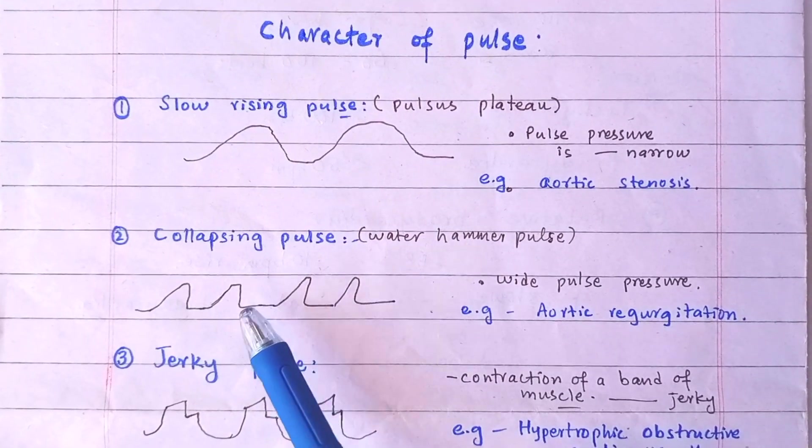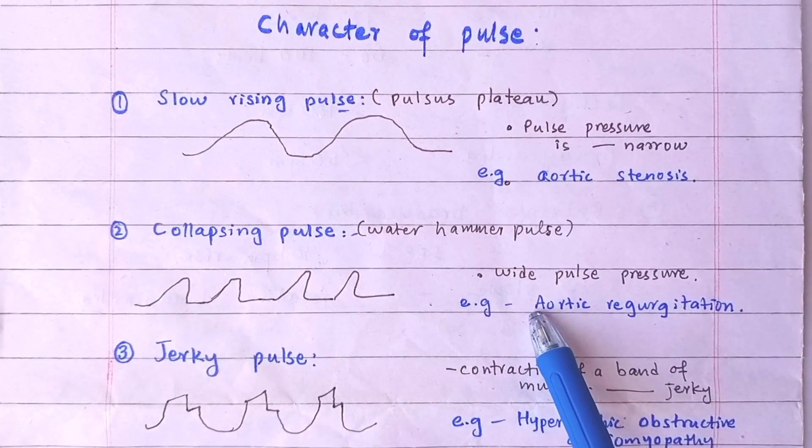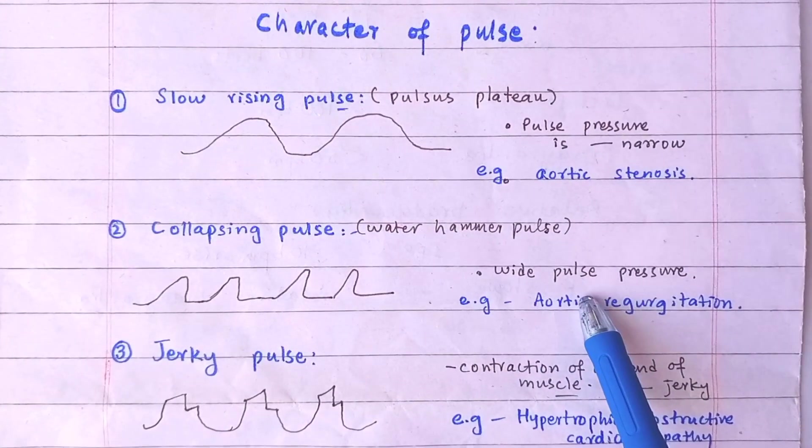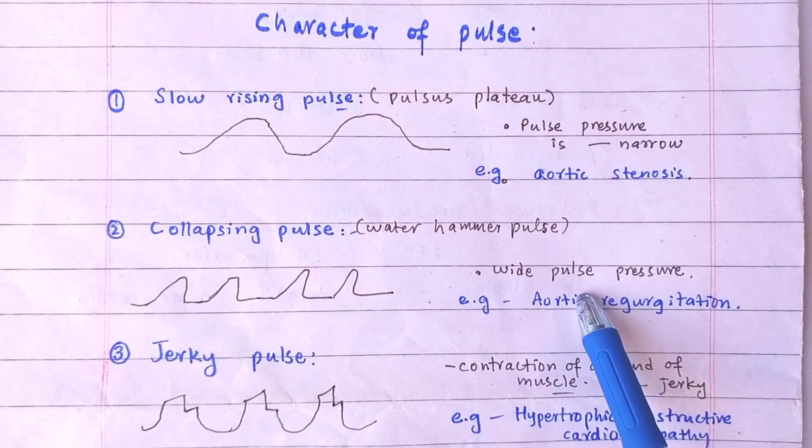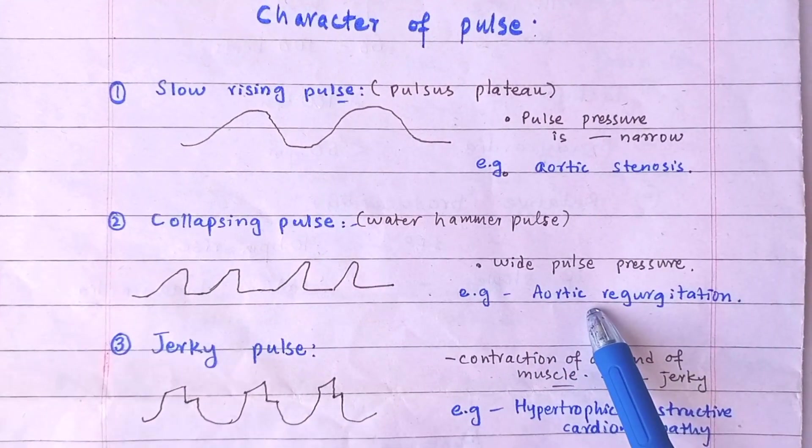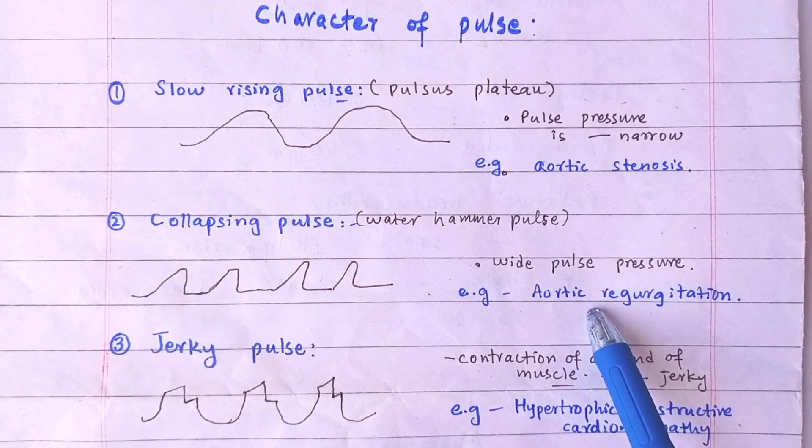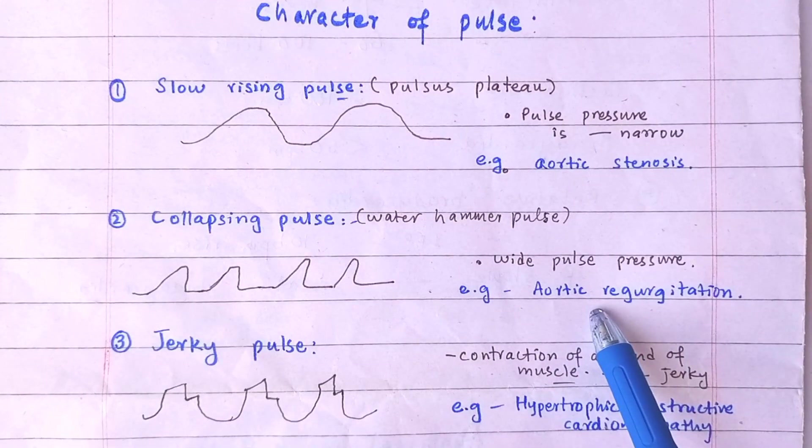The waveform of the collapsing pulse is like this. The collapsing pulse reflects wide pulse pressure that is more than 60 mm of mercury. Aortic regurgitation is the most important cause, but it can also occur in ventricular septal defect, persistent ductus arteriosus, severe anemia, and arteriovenous fistula.